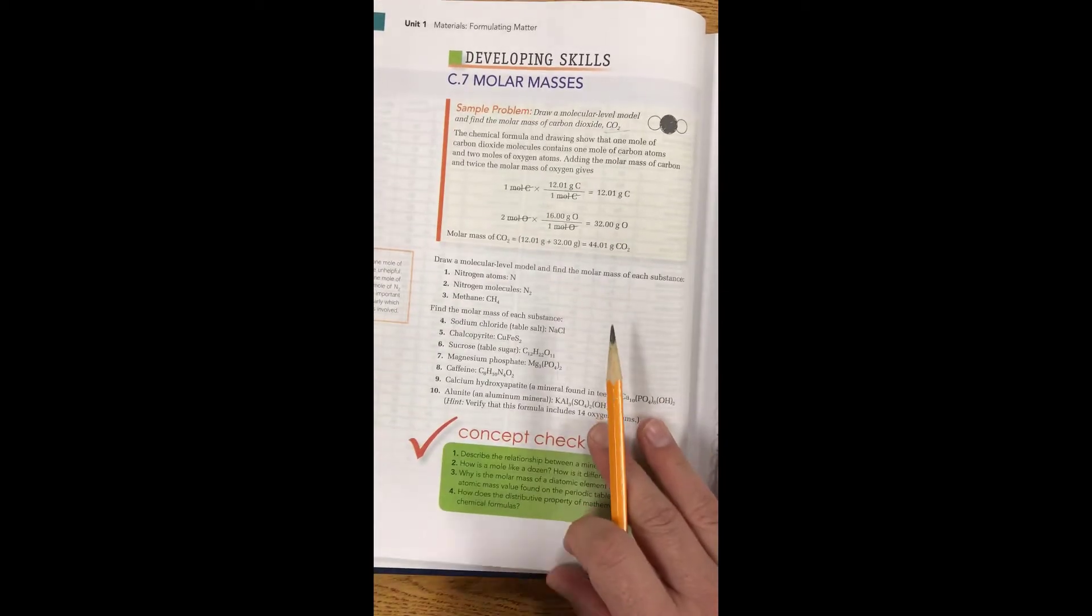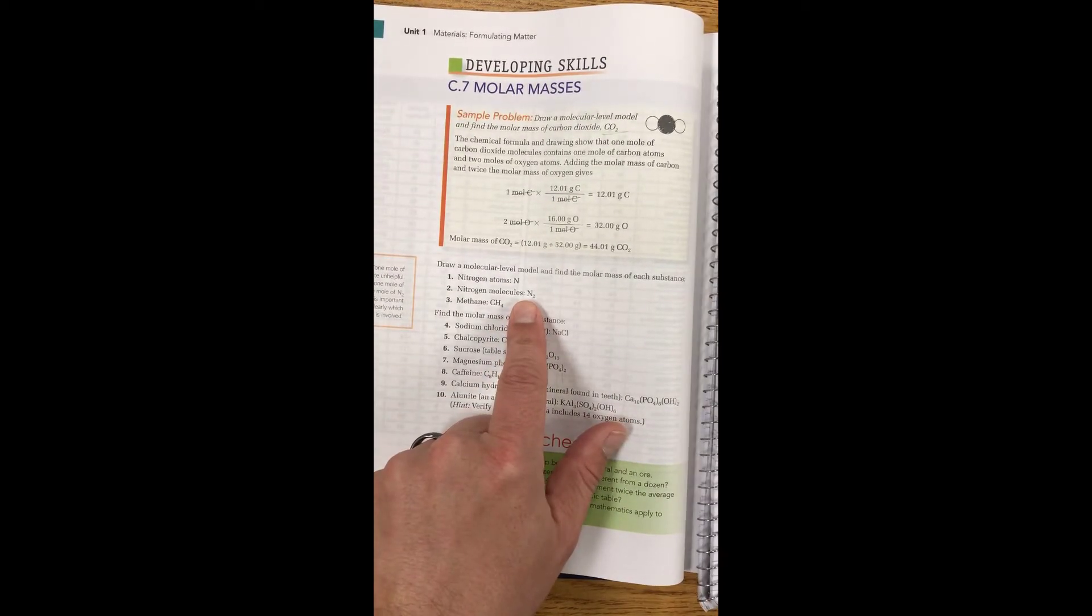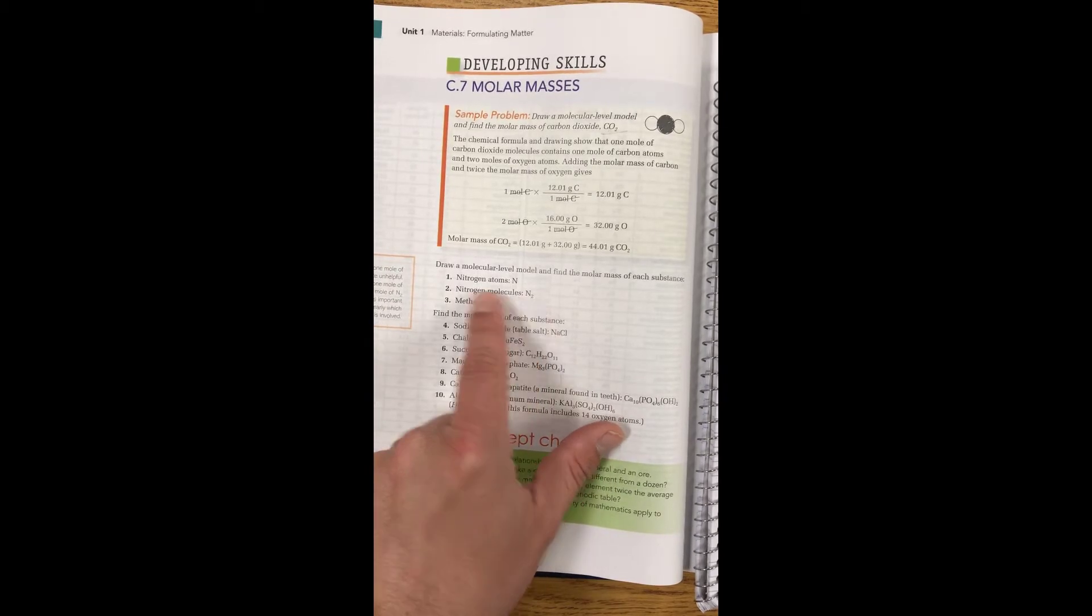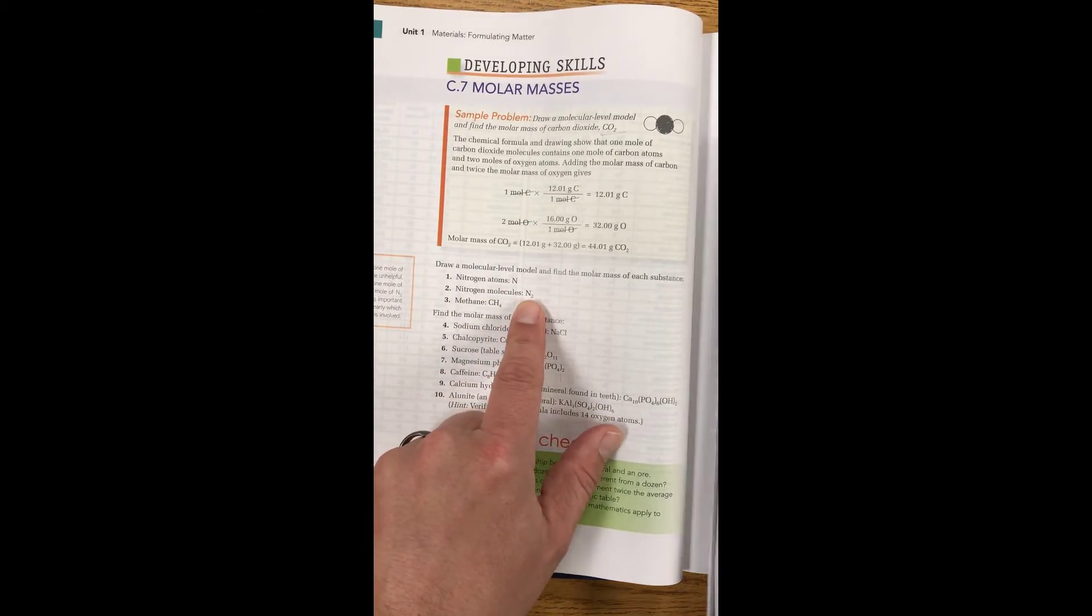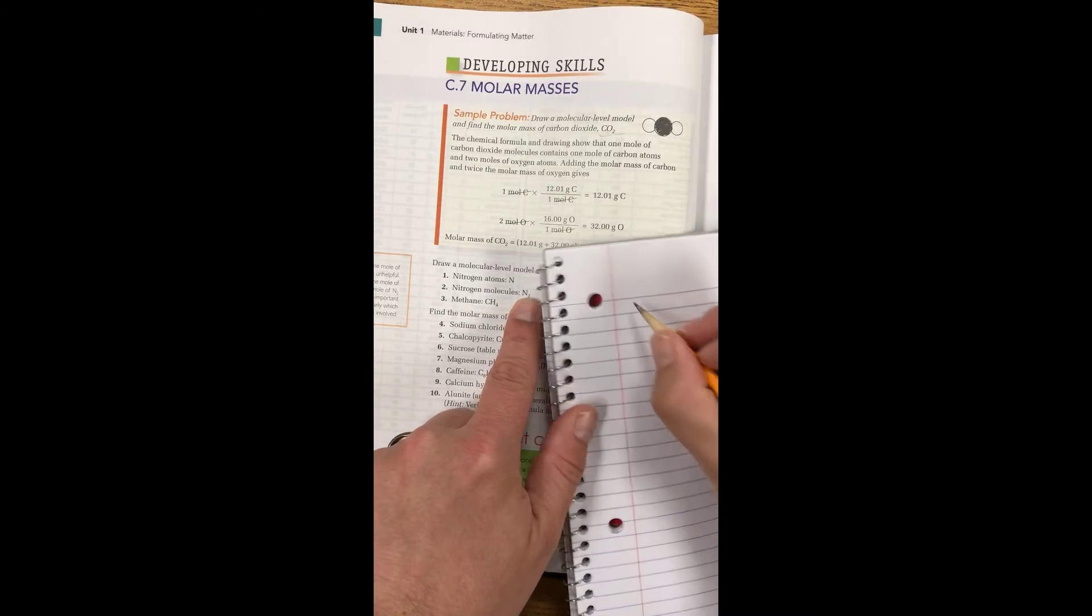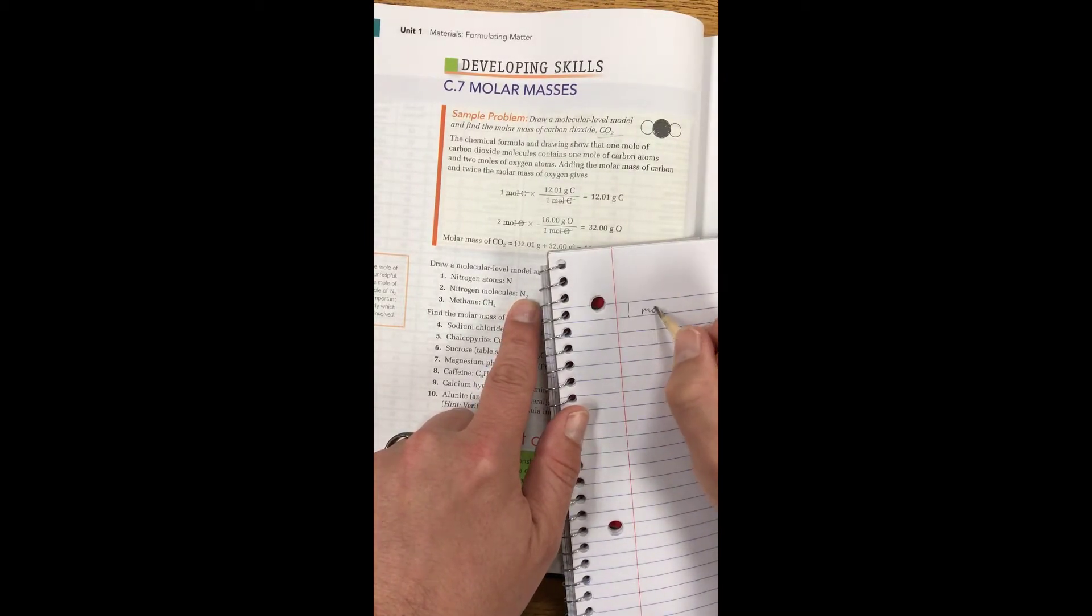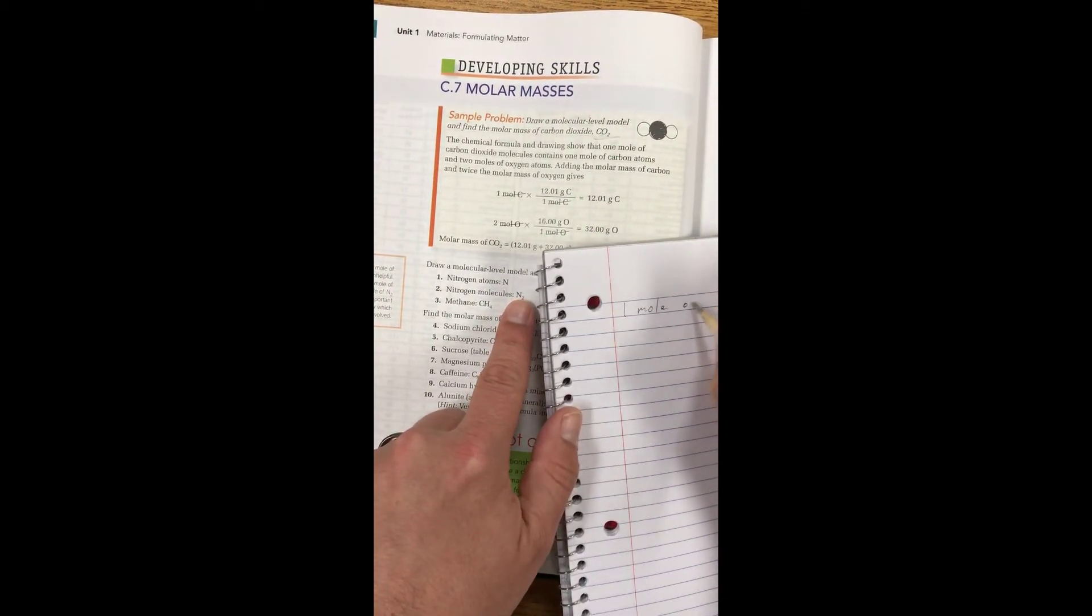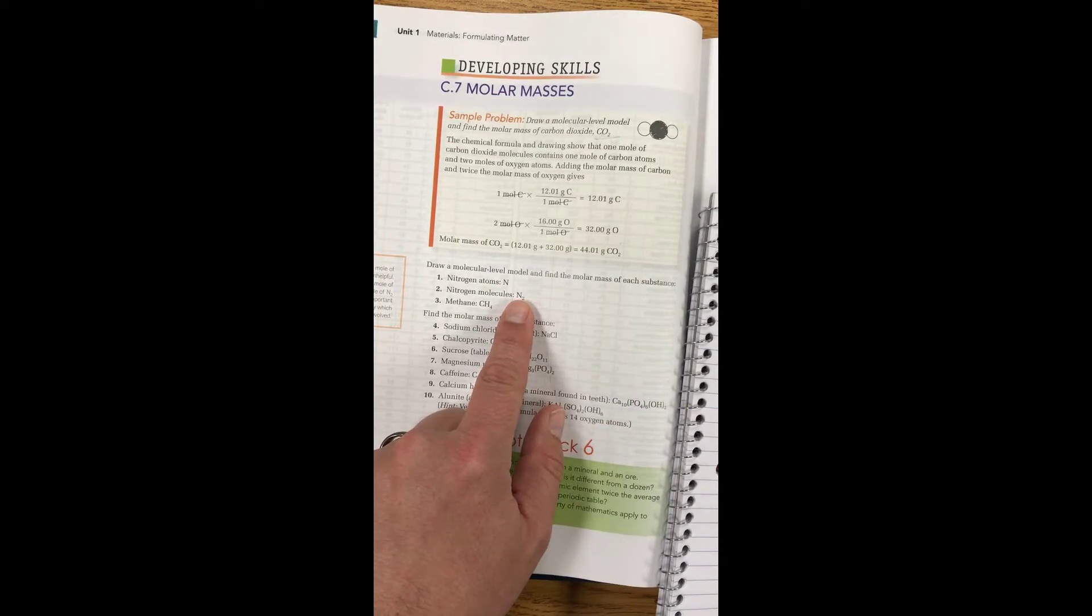Let's take the first example right here. Number two, nitrogen molecule. So I want to know how much one mole of N2, or nitrogen gas, is.